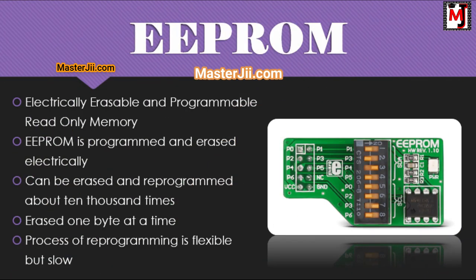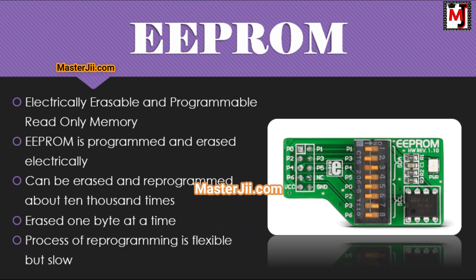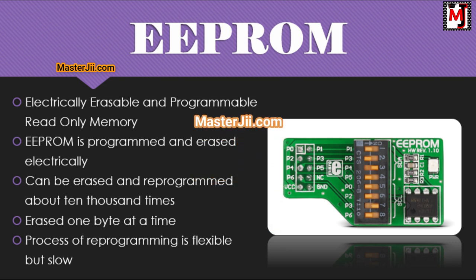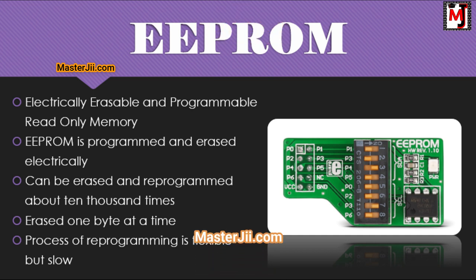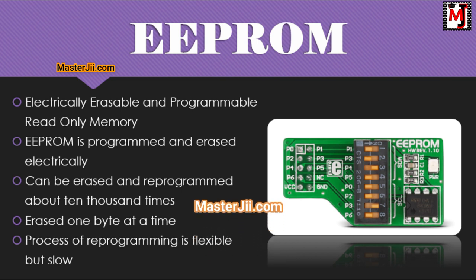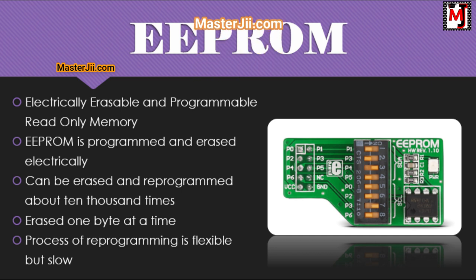The fourth type is EEPROM — Electrically Erasable and Programmable Read Only Memory. EEPROM is programmed and erased electrically. It can be erased and reprogrammed about 10,000 times. Both erasing and programming take about 4 to 10 milliseconds. In EEPROM, any location can be selectively erased and programmed. EEPROMs can be erased one byte at a time rather than erasing the entire chip, making the reprogramming process flexible but slow.